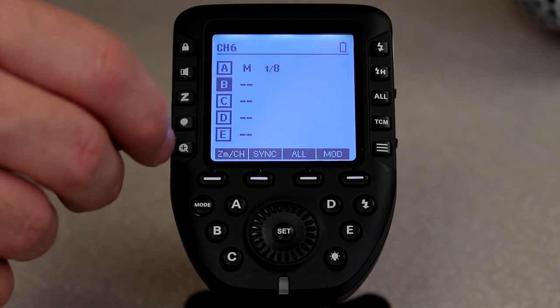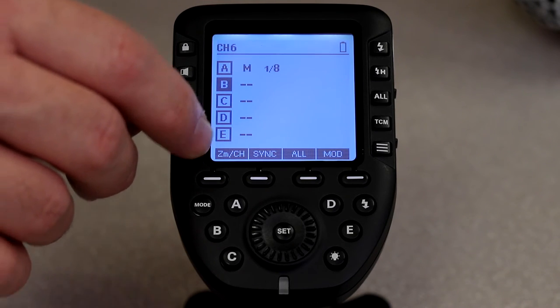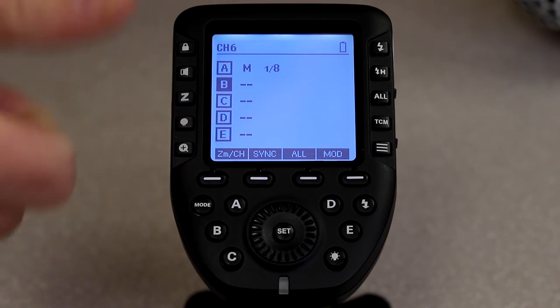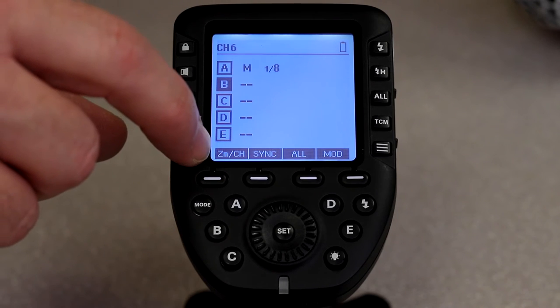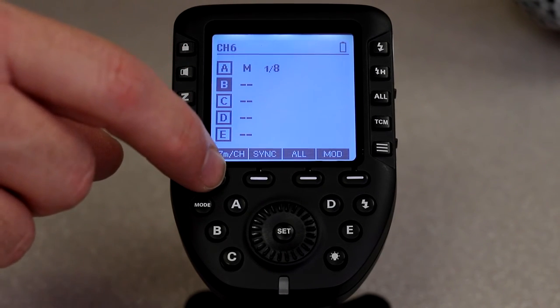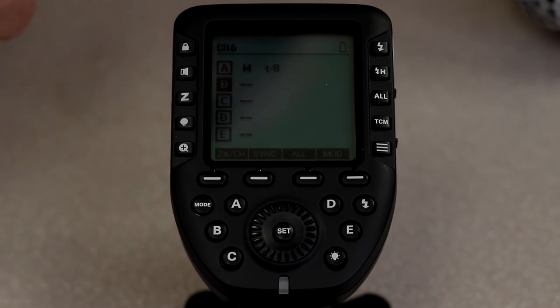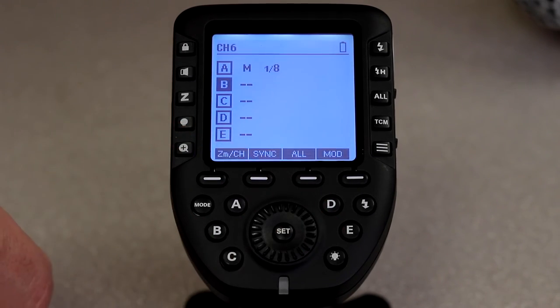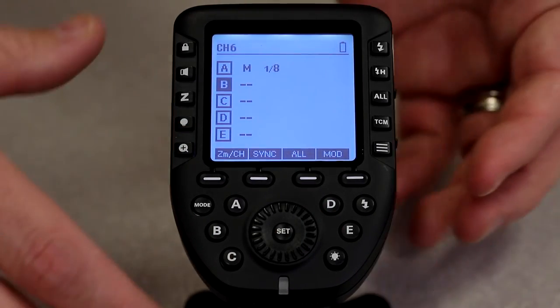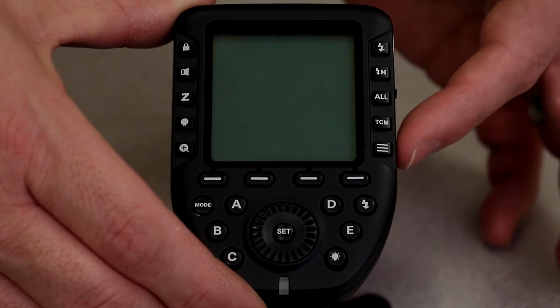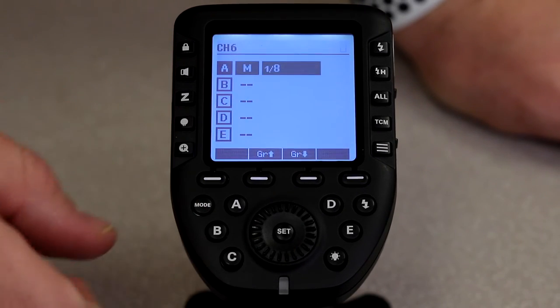And then the big thing to remember is anytime you're having issues with something like if the channel won't change or something like that, remember that if you ever see a slash in there, push and hold a button to be able to get to that sub menu, because this does have quite a few sub menus. The way you turn it off and on is just right here on the side, there's just a little switch over there to turn it off and on.